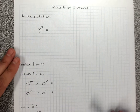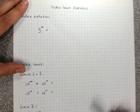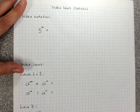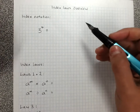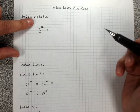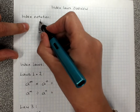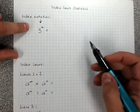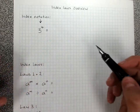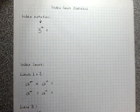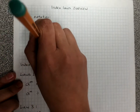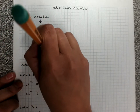Index laws overview. This is a reminder, now that we know the five index laws and the zero index law, as to how we use them. A reminder that index notation — notation means a way of writing things, index means a power — this is index form when I write a number or a letter to a power. The whole thing is called index form.